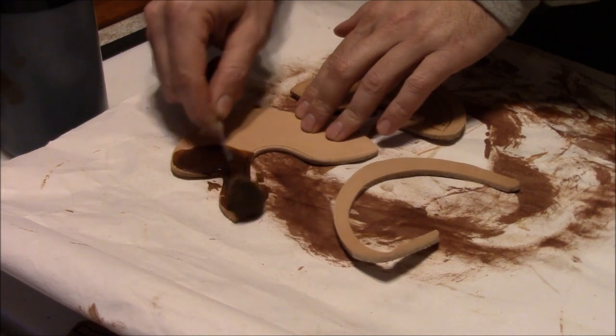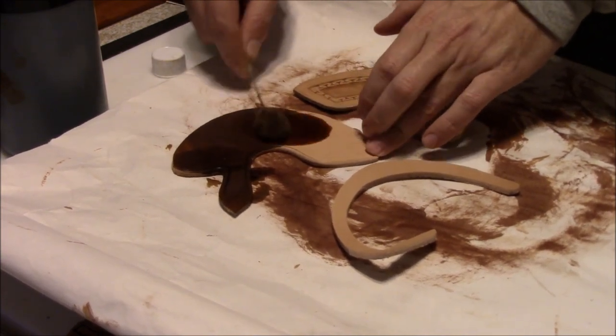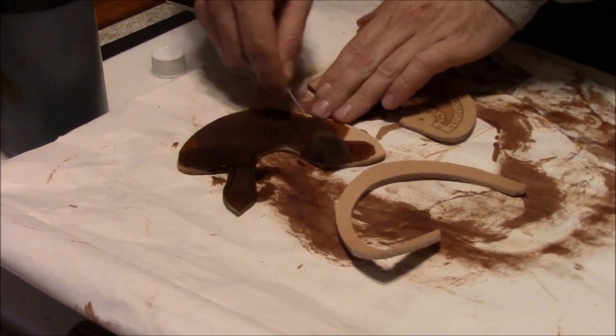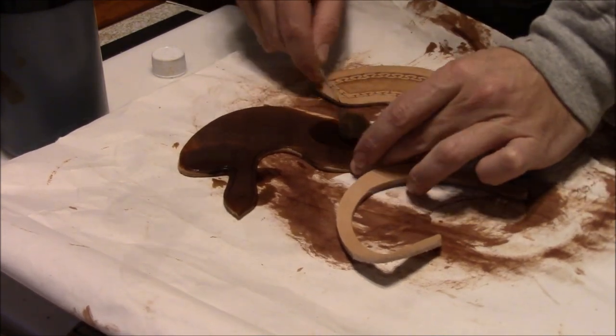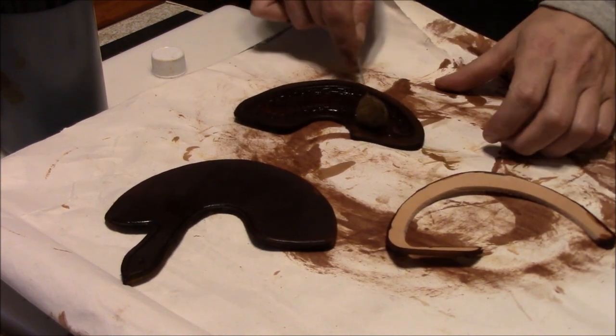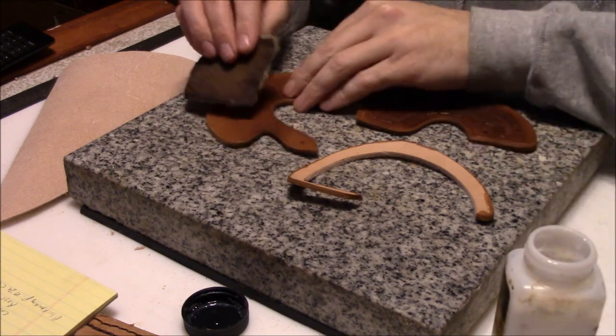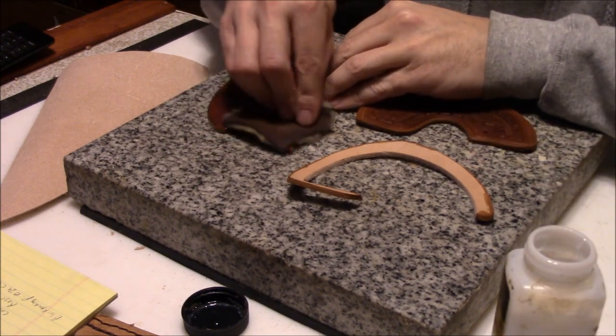Once it's all stamped up, I'm gonna go ahead and dye it. I'm using the same light brown oil dye that I used on the handle for the knife. It's gonna come out a little bit different color on the leather than it did on the wood, not quite as dark.